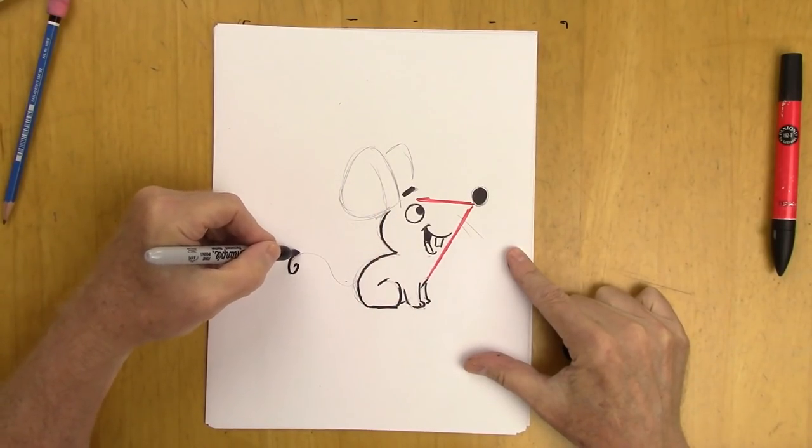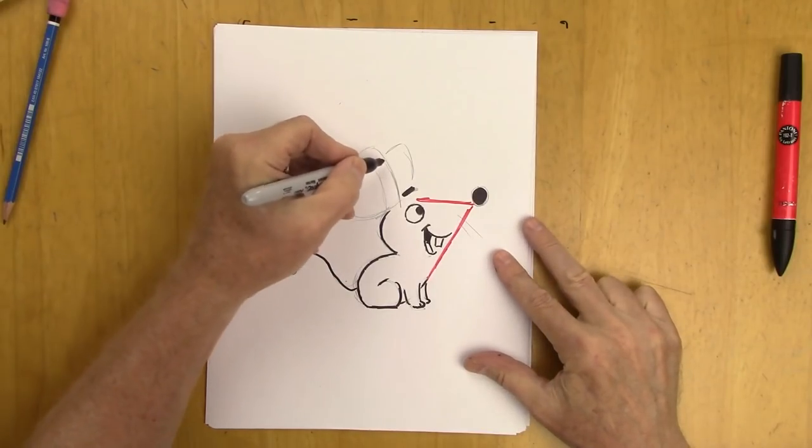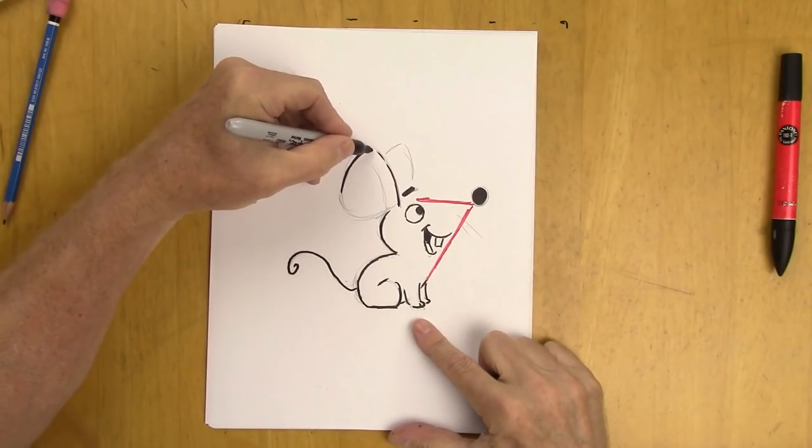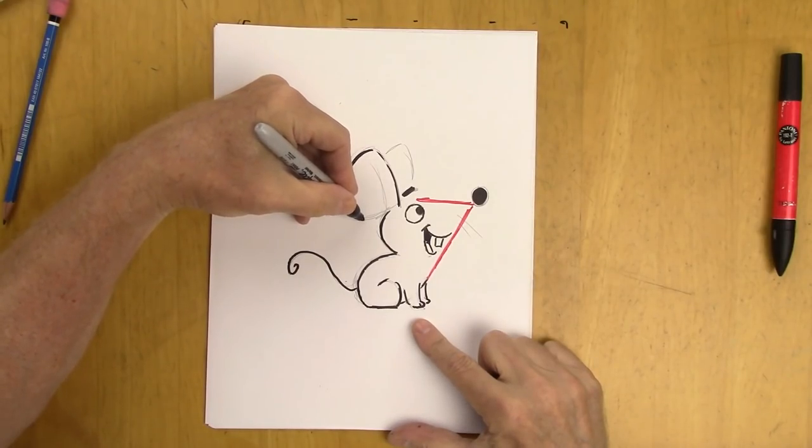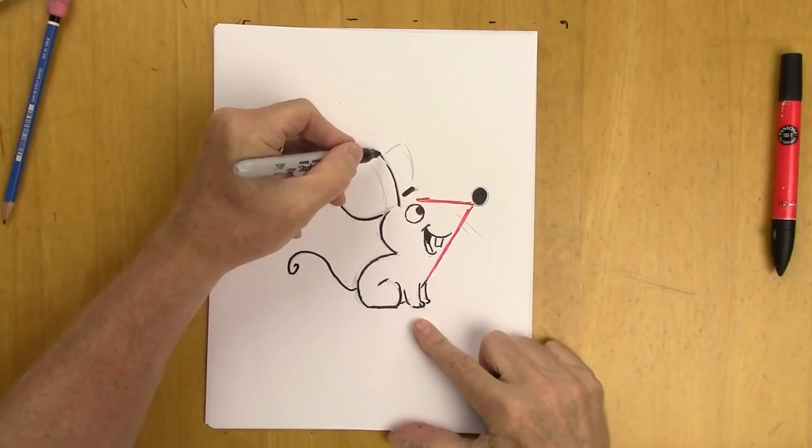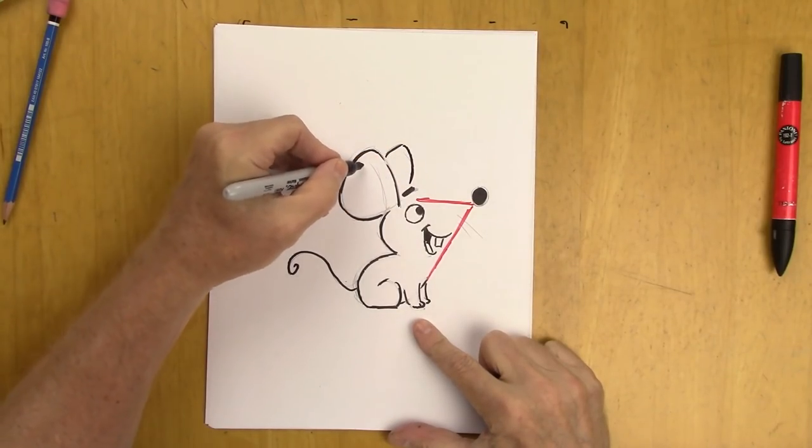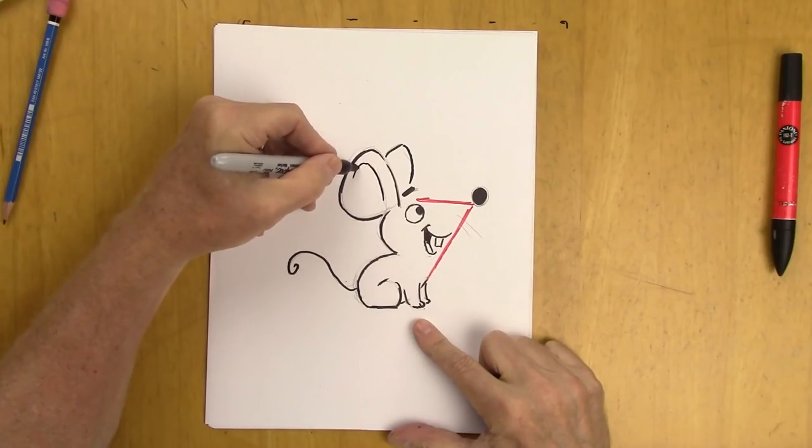We'll get a little swirl there and keep that away from the eye. Doesn't have to be exact. And now let's show the interior of the ear by doing this.